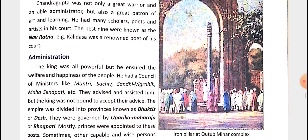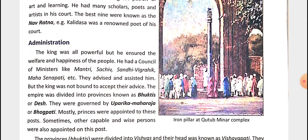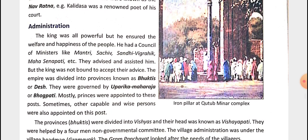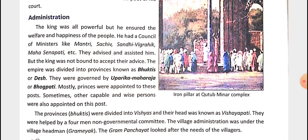Regarding administration: the king was powerful but interested in the welfare and happiness of the people. He had a council of ministers like Mantri, Sachiv, Sandhi-Vigrahika, and Mahasenapatietc., who advised and assisted him, though the king was not bound to accept their advice. The empire was divided into provinces known as Bhuktis, governed by Uparika, Maharaja, and Bhogpati.